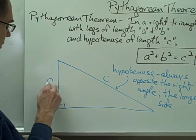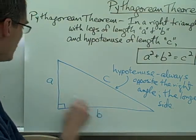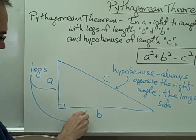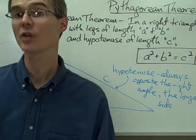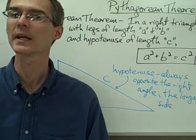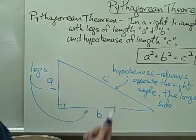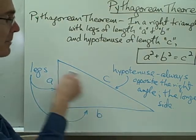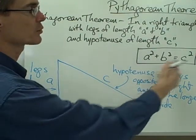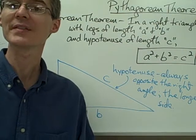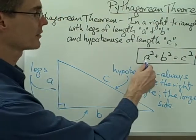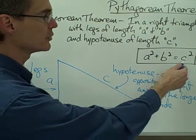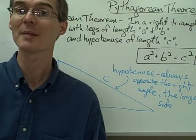The other two sides of the triangle are called the legs. The legs are just the two sides of the triangle that are not the hypotenuse. So anytime you have a right triangle, you label the legs A and B and the hypotenuse C. There's always going to be this relationship: the sum of the squares of the lengths of the legs is equal to the square of the hypotenuse.